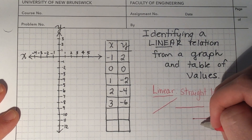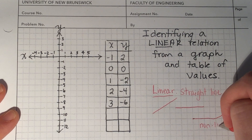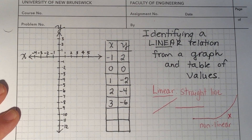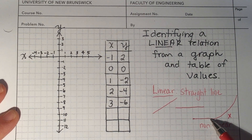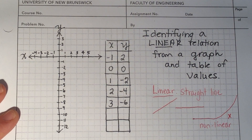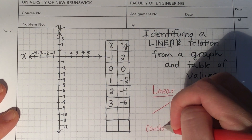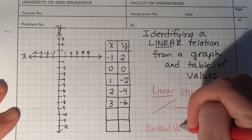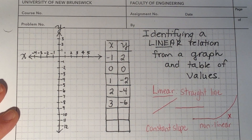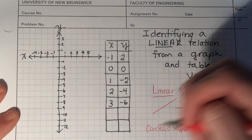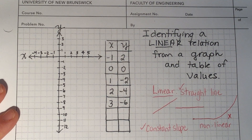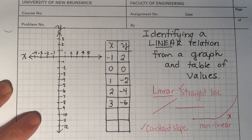And if I have one that starts off kind of straight but then curves upward, that would not be linear — that one is non-linear. The reason for that is I can't draw it with a ruler; it's not a straight line. The slope starts off as nothing and then gets steeper and steeper, so the slope changes. In order for it to be linear, it has to be a straight line and it has to have a constant slope.